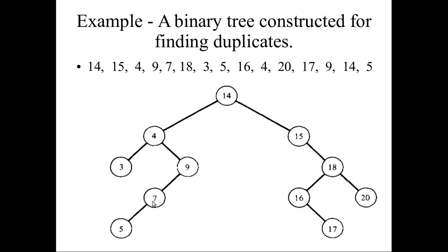Then 18: 18 is greater than 14, and 15 is already there; 18 is greater than 15, so it is placed as a right subtree of 15. Then 3: lesser than 14, lesser than 4, so it becomes the left subtree of 4. Then 5: lesser than 14, greater than 4, lesser than 9, greater than 7, so it is placed on the right side of 7.